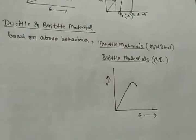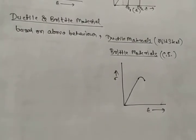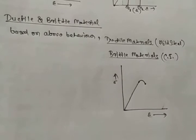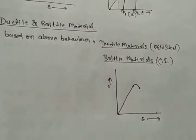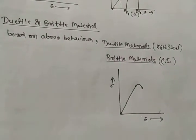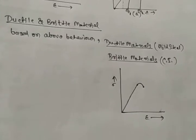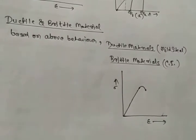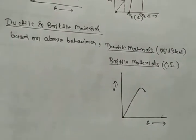Now, we consider brittle material. We have some cast iron specimen and we apply tension test. This type of material is one which exhibits a relatively small extension or deformation to fracture so that the partially plastic region of tension test graph is much reduced. This type of graph is shown by the cast iron or steel with high carbon content or concrete.